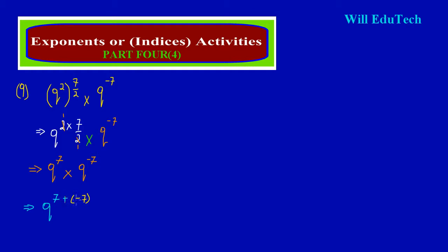Now remember when working with directed numbers — feel free to check out our playlist on negative and positive numbers. When two different signs clash, the negative sign is dominant. So this is really saying Q raised to the seventh power and we are subtracting 7. A 7 minus 7 gives 0, so this is base Q raised to the 0 power, which equals 1. That's our answer, because anything raised to the power of 0 is 1.